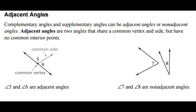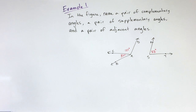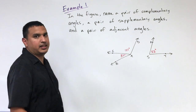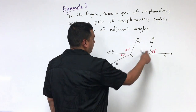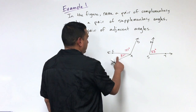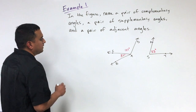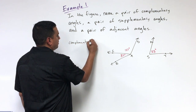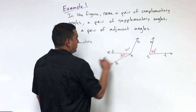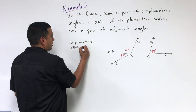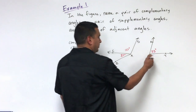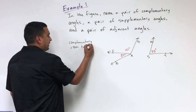Example one: in the figure, name a pair of complementary angles, a pair of supplementary angles, and a pair of adjacent angles. For complementary angles, they have to add up to 90 degrees. Looking at the measurements, the 37 degrees and 53 degrees add up to 90. However, I can't just call that angle A because it's ambiguous, so I have to use three letters — angle BAC. And since there's only one angle at vertex S, I can call that one angle S.